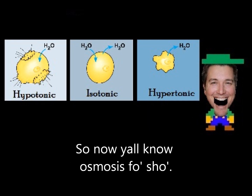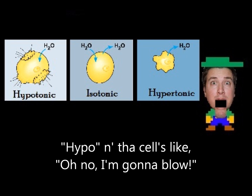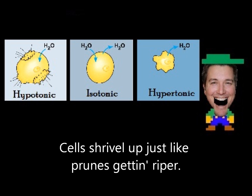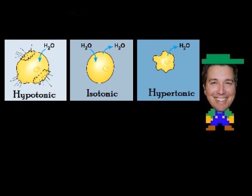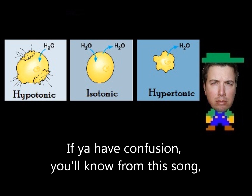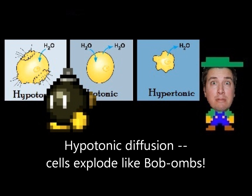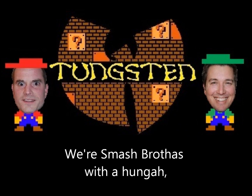Iso- done told you so — get it wrong and I'm not to blame. So now y'all know osmosis for show: hypo in the cells like 'Oh no, I'm gonna blow!' For hyper you can use this tune to decipher — cells shrivel up just like prunes getting riper. If you have confusion, you'll know from this song: hypotonic diffusion, cells explode — like Bob-omb!